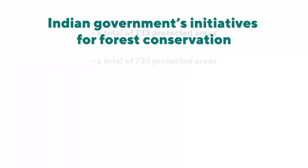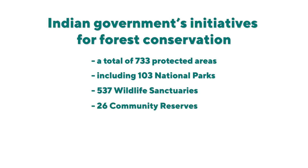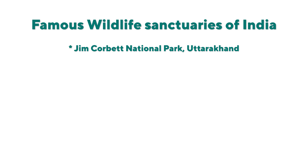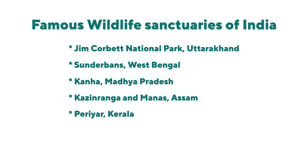Our government takes many measures to conserve these forests. India has a total of 733 protected areas, including 103 national parks, 537 wildlife sanctuaries, 26 community reserves, and 67 conservation reserves. Some famous wildlife sanctuaries include Jim Corbett National Park in Uttarakhand, Sundarbans in West Bengal, Kanha in Madhya Pradesh, Kaziranga and Manas in Assam, and Periyar in Kerala.